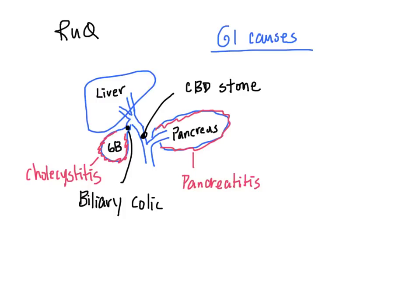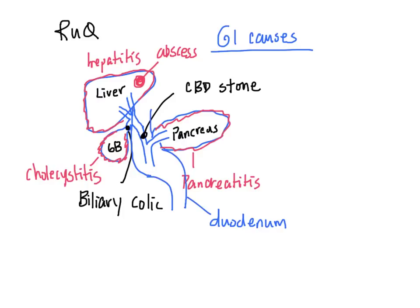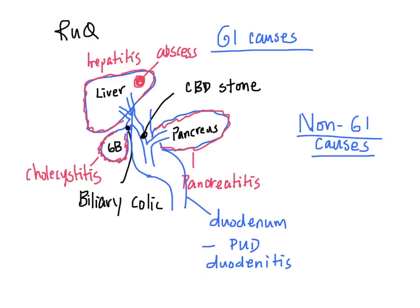Inflammation of the liver, or hepatitis, or abscess can give patients right upper quadrant pain as well. Since the duodenum also passes through this area, conditions such as duodenitis and peptic ulcer disease can also give patients pain there. For non-GI causes, right on top of the right upper quadrant is the diaphragm and the lungs. Therefore, conditions such as pneumonia and pleural effusion can give patients pain in the right upper quadrant.